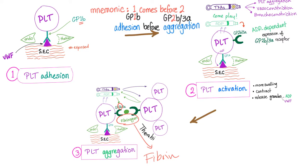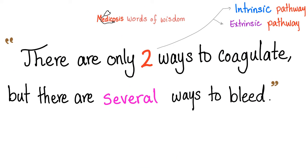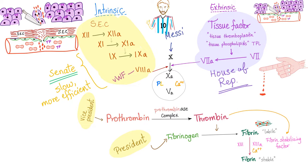Why do we call it thrombin? Because this is the protein of thrombosis. There are only two ways to coagulate — the intrinsic and the extrinsic — but there are several ways to bleed. This is physiology; this is pathology. Secondary hemostasis, or the coagulation cascade: what's the goal? Fibrin — because successful people begin with the end in mind, as Stephen Covey said.